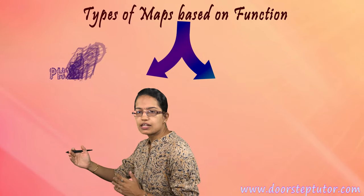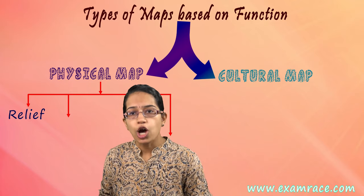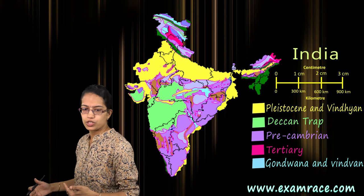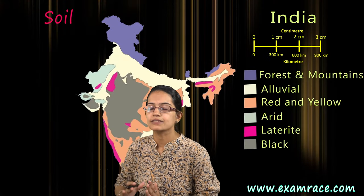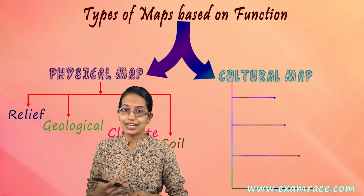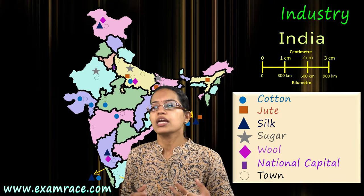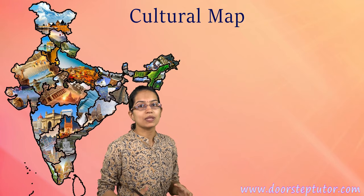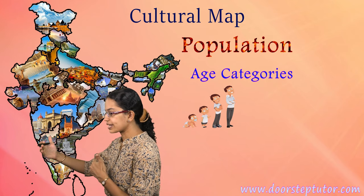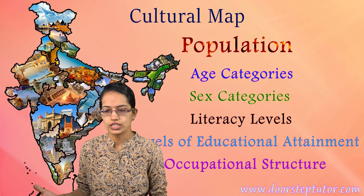A physical map focuses on relief features — mountains and rivers. A geological map talks about the time period of evolution. A climate map covers climatic changes of the region, and a soil map explains soil details. A cultural map focuses on political boundaries and their changes, economic features like agriculture and industry, population, and transportation. Cultural maps also explain population in terms of age and sex categories, literacy levels, educational attainment, and occupational structure.